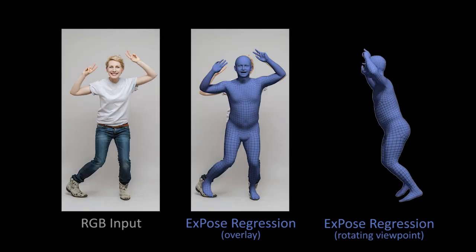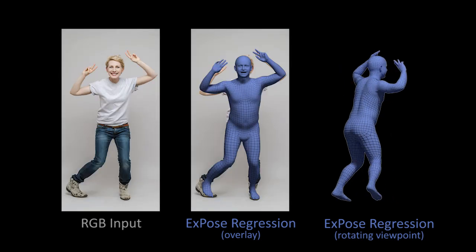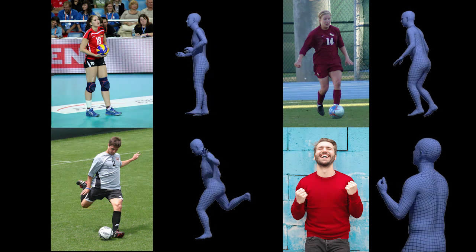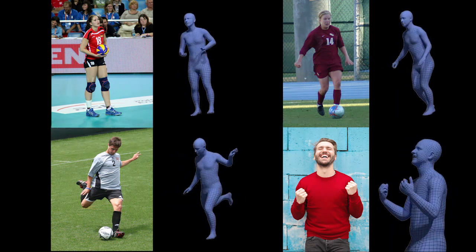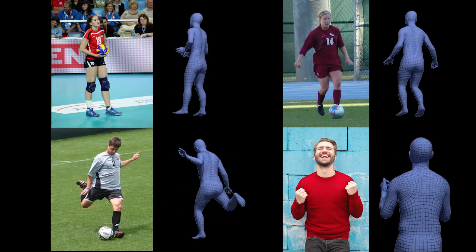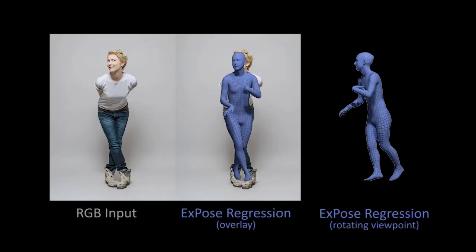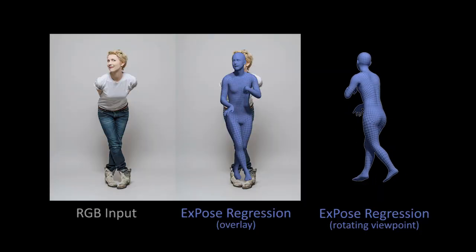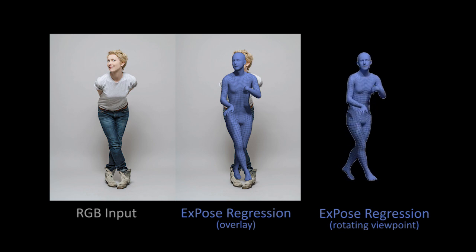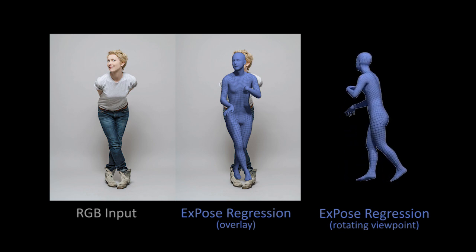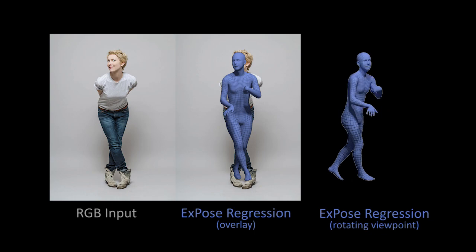EXPOSE gives natural reconstructions for a broad range of different scenarios. These include indoor images, outdoor images, fashion images, sports images or typical selfies. EXPOSE fails in cases of challenging occlusions like hands in pockets or arms behind the back. Future work should address such cases with explicit reasoning about occluded body parts.